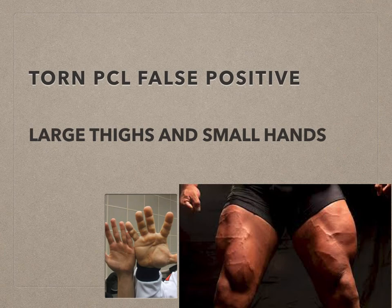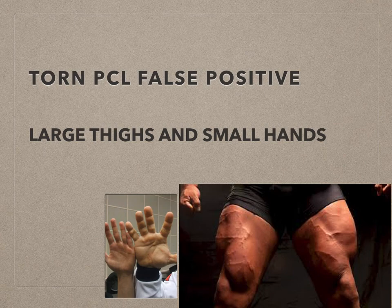The reason being, in the starting position of the Lachman test, the tibia will rest further posterior than usual due to the absence of the PCL, leading to increased excursion during the test. This means PCL integrity should be assessed prior to looking at ACL integrity occasionally. And yes, large thighs are difficult to grip with small hands — I'm sure we all have faced this problem.